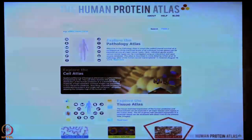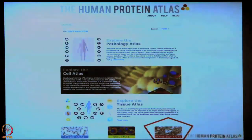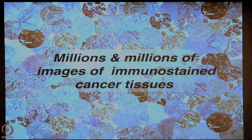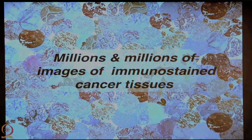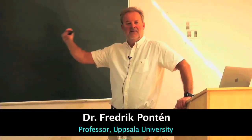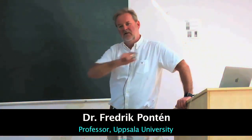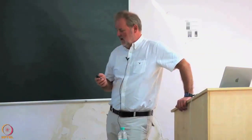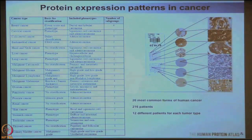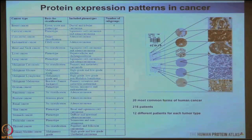The third part is the Pathology Atlas, which has been closest to me since I am a pathologist. We started off with millions of images of immunochemically stained cancer, showing how different proteins are expressed in cancer. What we had were tissue microarrays that included 12 individually different tumors for each tumor type — 12 breast cancers, 12 colon cancers, 12 gliomas, etc. — trying to include the prototypic types of tumors.